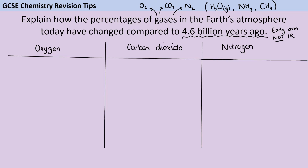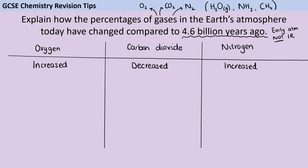For each one of these three major gases, we want to describe what has happened to the proportion of it in the atmosphere and also why that is the case. Oxygen and nitrogen have both increased in the Earth's atmosphere, and carbon dioxide has dramatically decreased. Then we can start to think about why this is the case.